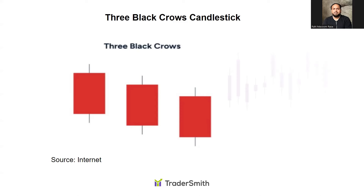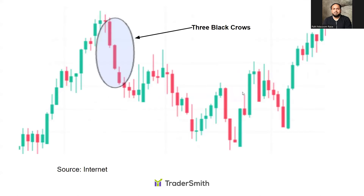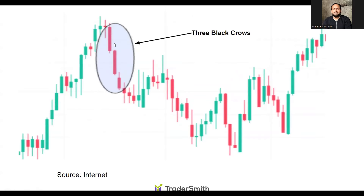On this chart you can see a downtrend formation here, and after this downtrend formation we can see there is a formation of Three White Soldiers, and after this formation there is a rise in the market. In the same way, looking at the chart here, after this rise in the market there is a formation of Three Black Crows, and when that Three Black Crows formation occurred, we saw a fall in the market.